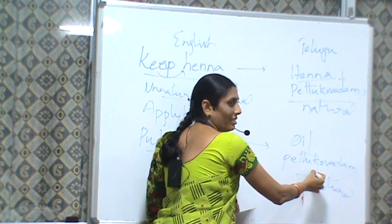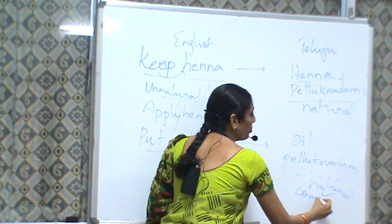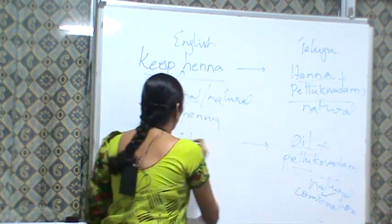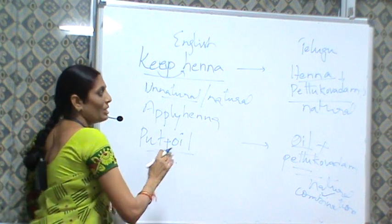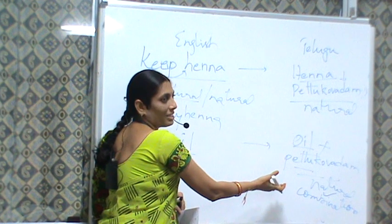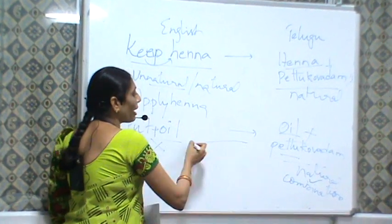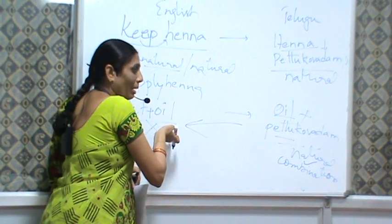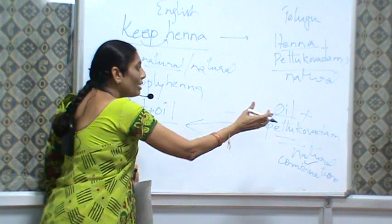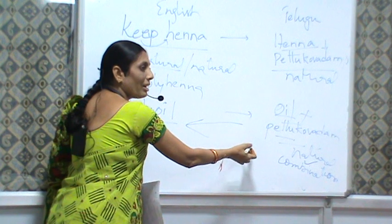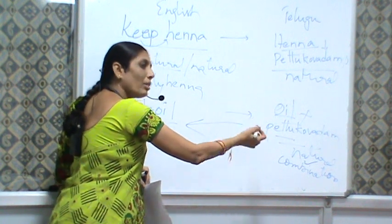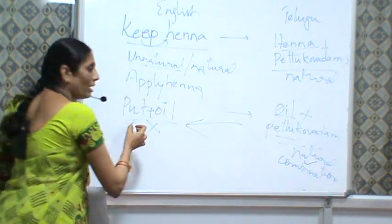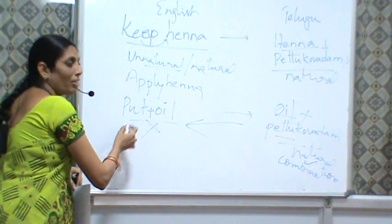So 'oil' and 'pettadam' can go together — this becomes a natural combination of words, which means they can collocate. They can combine. But 'put' and 'oil' cannot combine. So this natural combination of words is nothing but a collocation. We are just trying to translate Telugu combinations into English, and that's why we are able to make mistakes. Students are trying to literally translate the word combinations. So here we can understand that every language has got its own combinations, and we cannot translate those combinations of words into English. We tend to make mistakes if we literally translate.